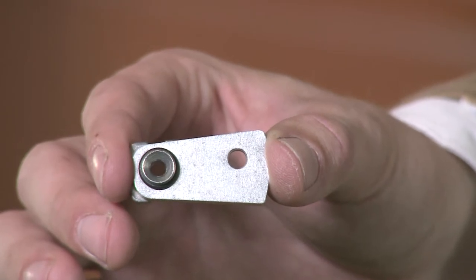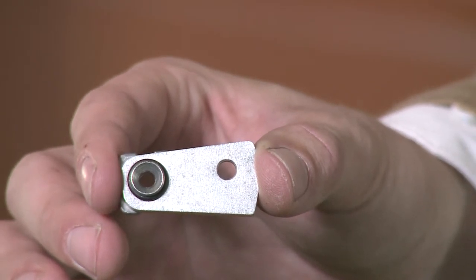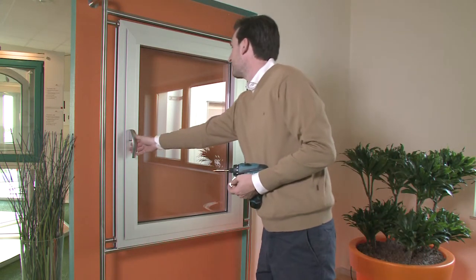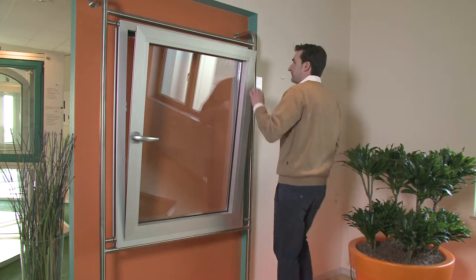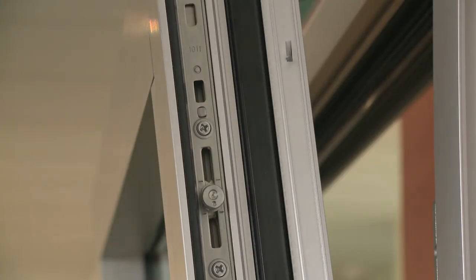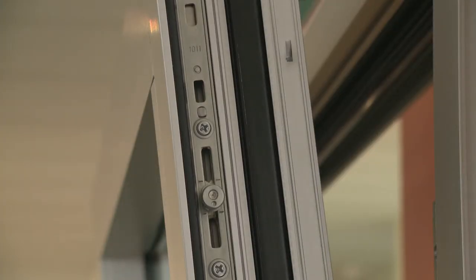Roto provides a simple component that can be used to restrict the use of a tilt first window, making it tilt only. This travel restrictor consists of a small swiveling plate that is screwed into the fixing position on the top corner drive.